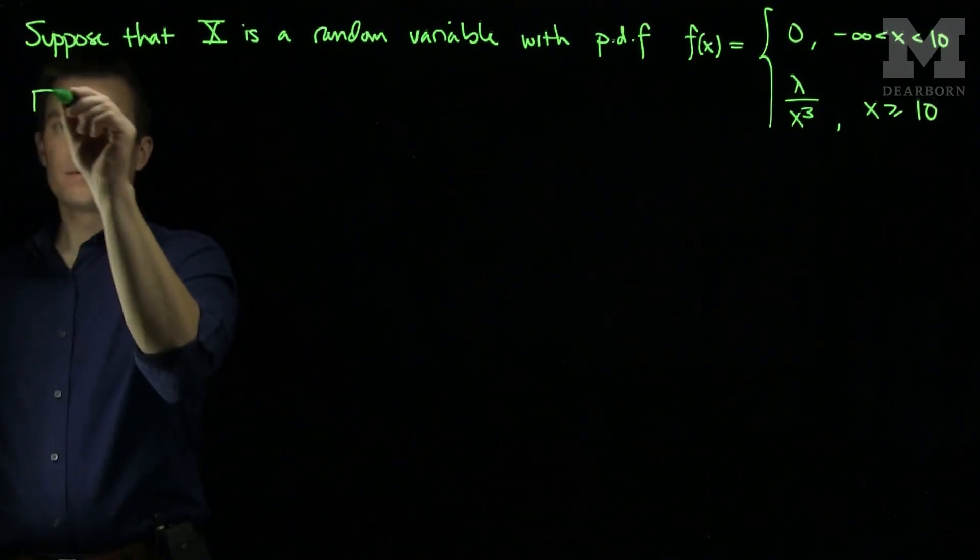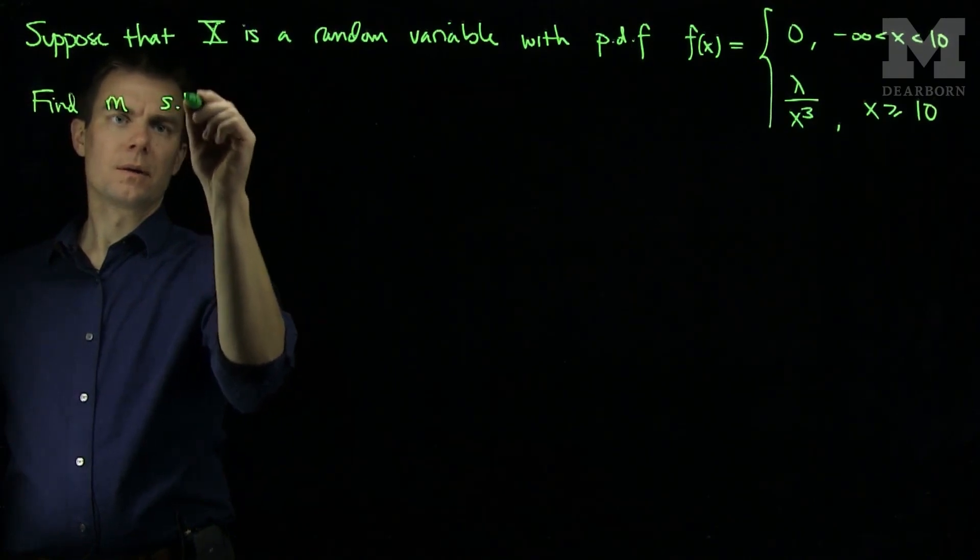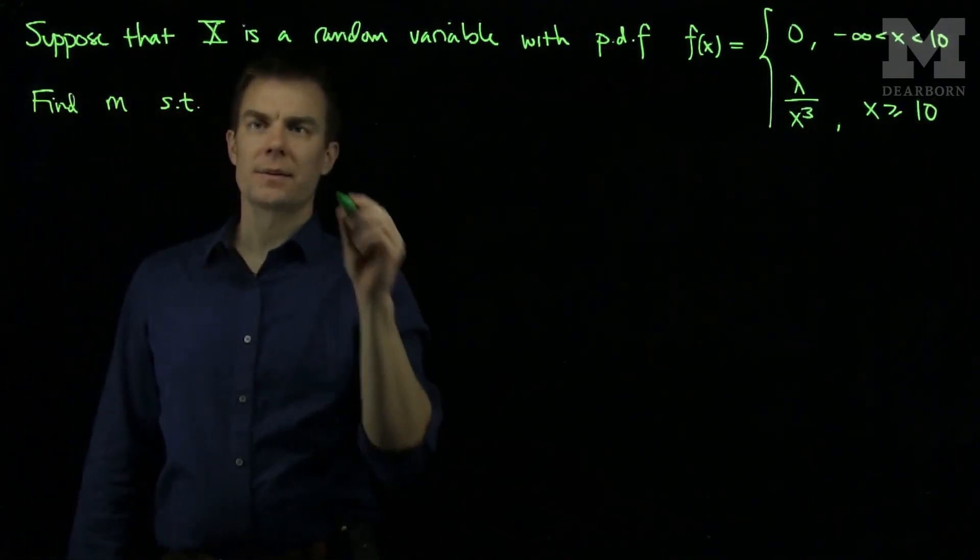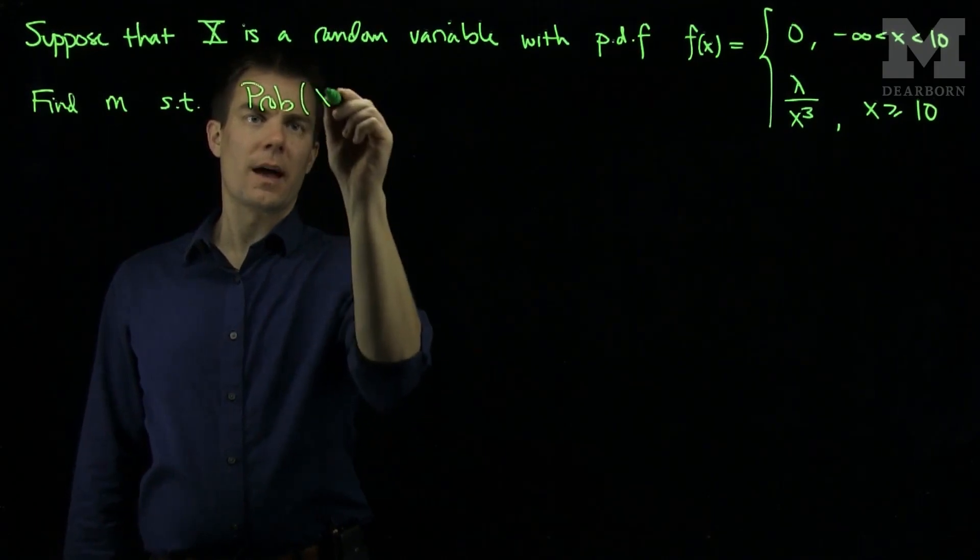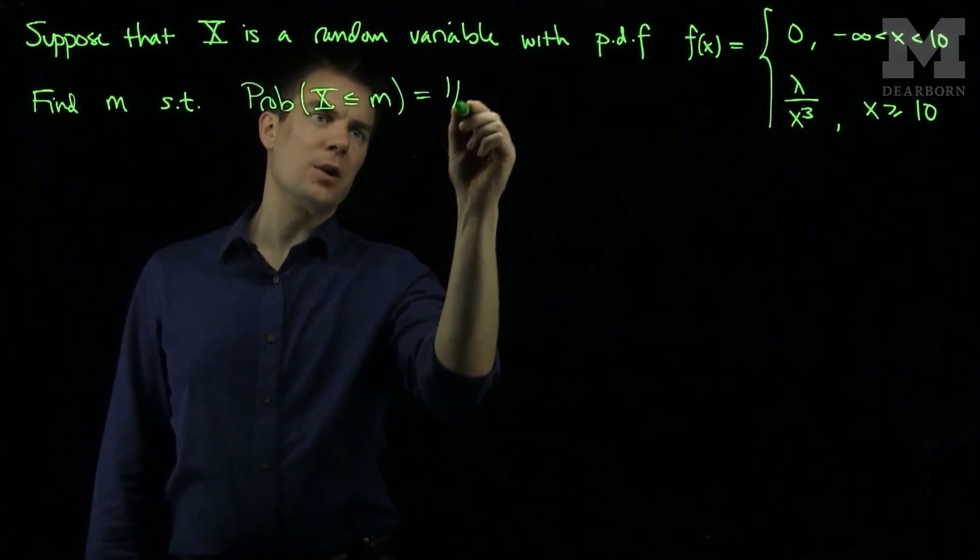We want to find m such that the probability that x is less than or equal to m is equal to 1 half.